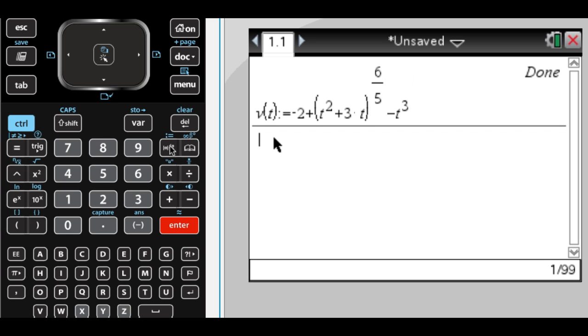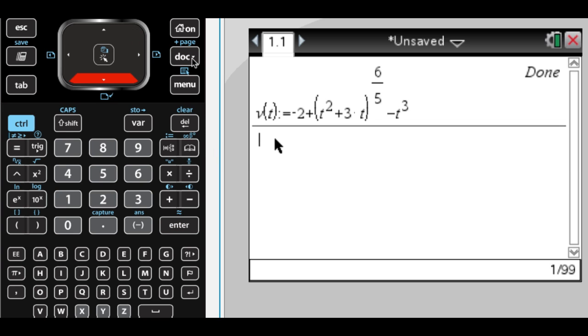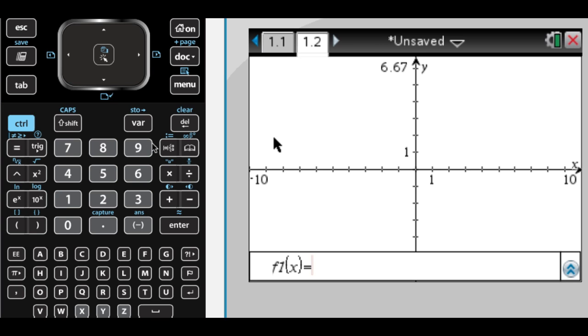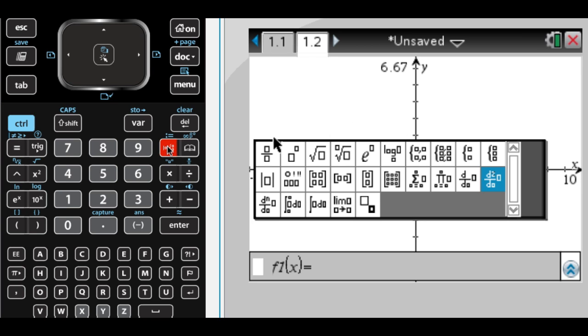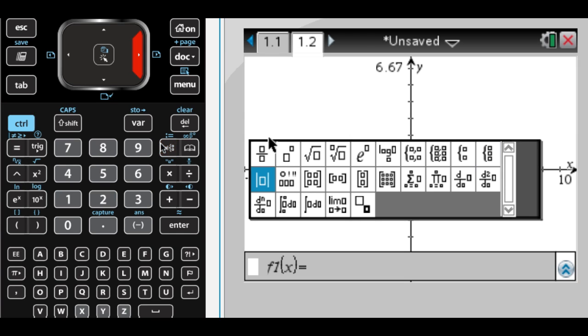I want to know all values between t equals 2 and t equals 4 for which the speed of the particle is 2. So I'm going to insert a graph. I'm going to ask the calculator to graph the absolute value. So that's in the second row, first column.